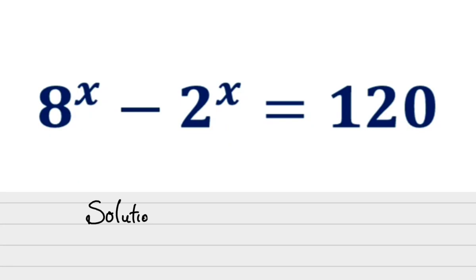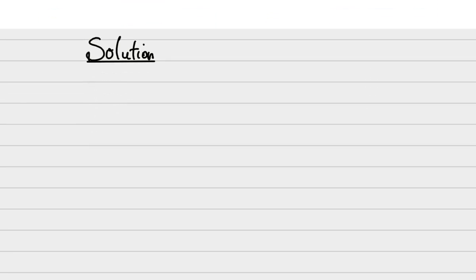Solution now. Okay students, I'm going to make sure I simplify this question for your own understanding, so I need you to pay attention. We have 8 raised to power x minus 2 raised to power x equals 120. Now, this question is actually an indices problem. The only issue here is that we cannot actually use the laws of indices that we know to work out this question. We have to improvise.